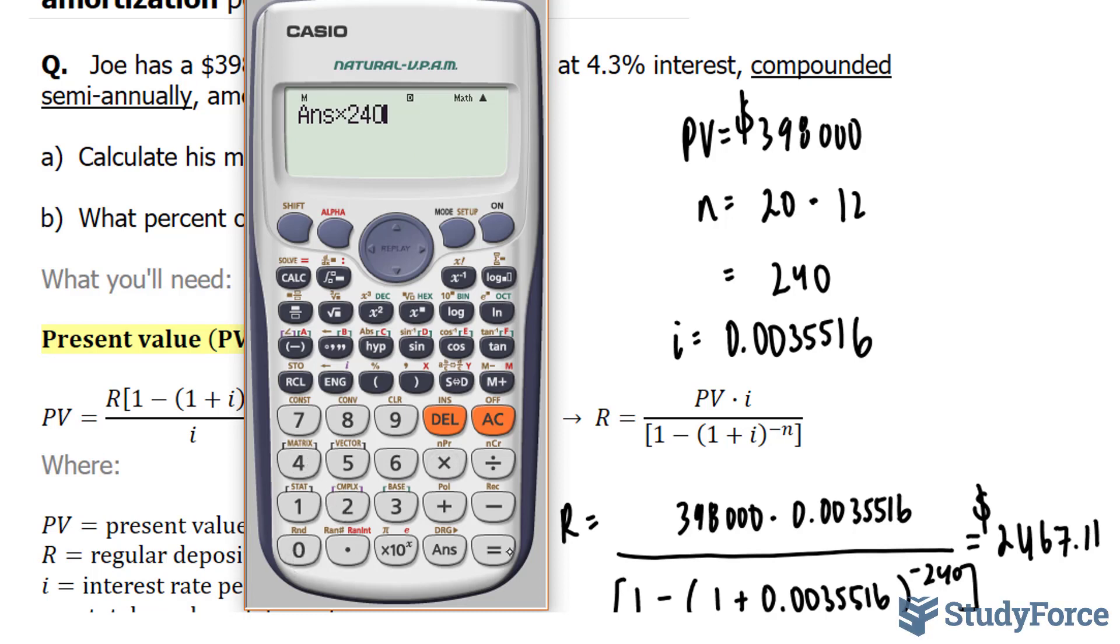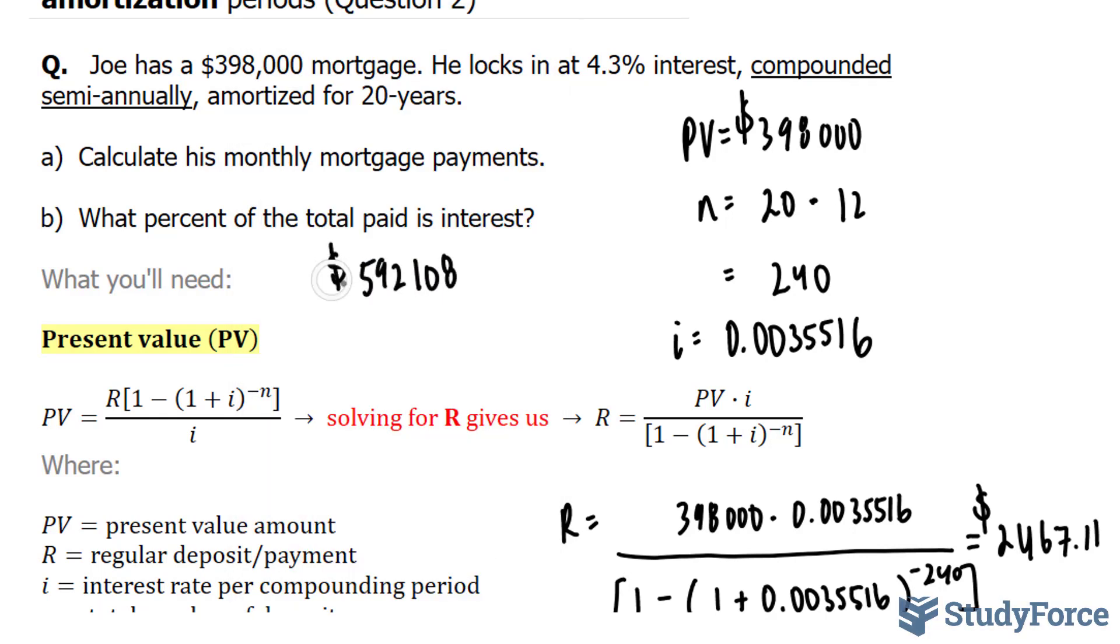Multiplying this by 240 gives us 592,108. The number right here represents the total amount that he will pay after 20 years.